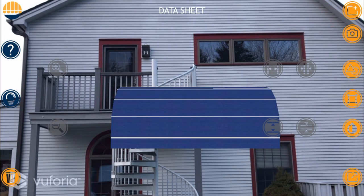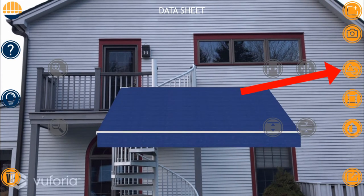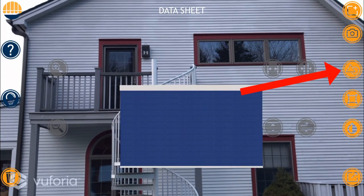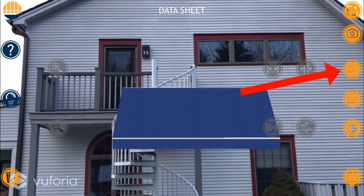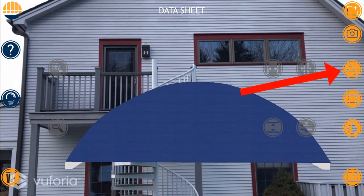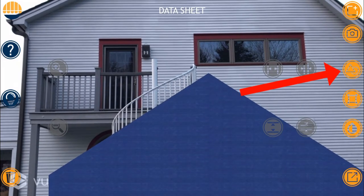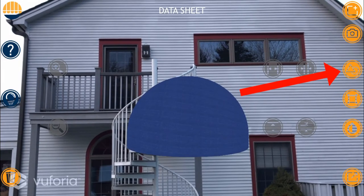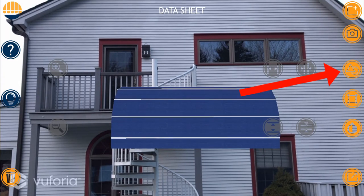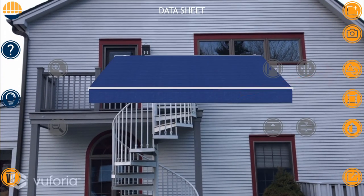I'm now able to select a particular style awning I want to visualize by scrolling through the Shapes icon. I can choose to keep the original rib style awning, or I can choose a lateral arm awning, drop shade, shed style, quarter round, gable end, or dome awning. For this demonstration, I'll just go with the lateral arm awning for now.